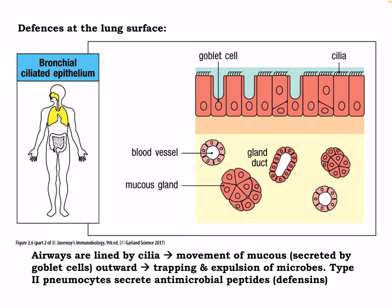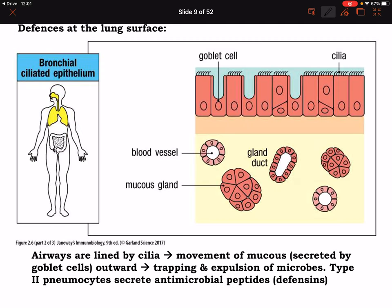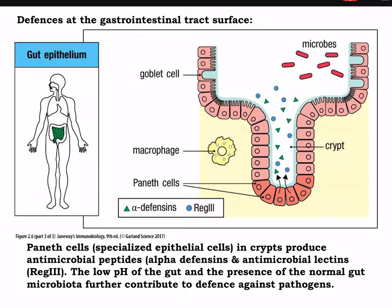Looking at the lungs, we have our mucus and cilia. Goblet cells produce the mucus — we're constantly producing it — and we also have mucus glands. The airway is lined by cilia, causing movement of mucus outward, trapping and expelling microbes. We also have type-2 pneumocytes, which create antimicrobial peptides including defensins.